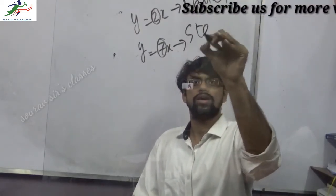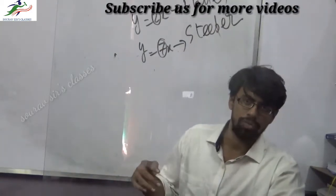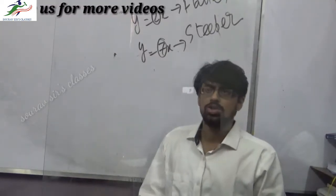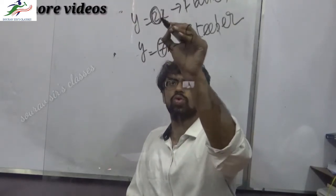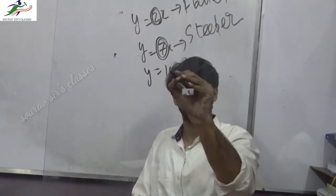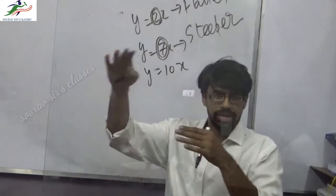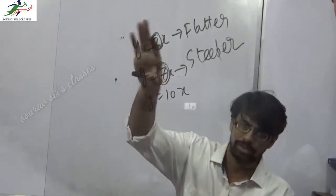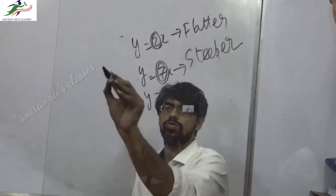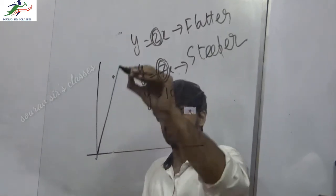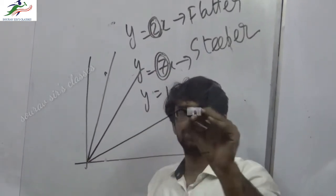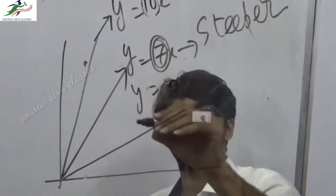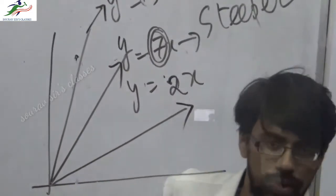A smaller coefficient like 2x gives a flatter graph, while a larger coefficient like 7x gives a steeper graph. Remember: 10x is steeper than 7x, which is steeper than 2x — 2x is the flattest of the three. If I draw all three: y equals 10x is the steepest, y equals 7x is in the middle, and y equals 2x is the flattest.